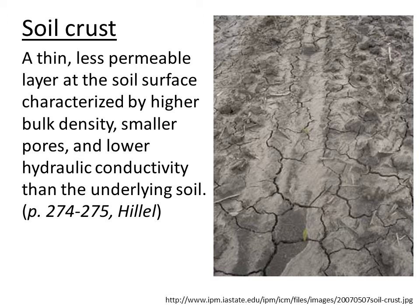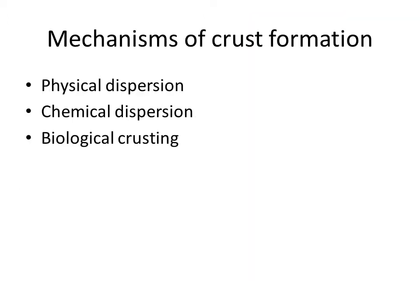First, I want you to know this definition of a soil crust: it's a thin, less permeable layer at the soil surface, characterized by higher bulk density, smaller pores, and lower hydraulic conductivity than the underlying soil. There are three mechanisms of crust formation I want you to know: physical dispersion, chemical dispersion, and biological crusting.